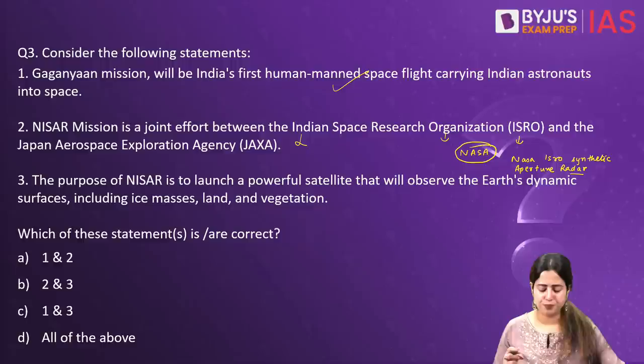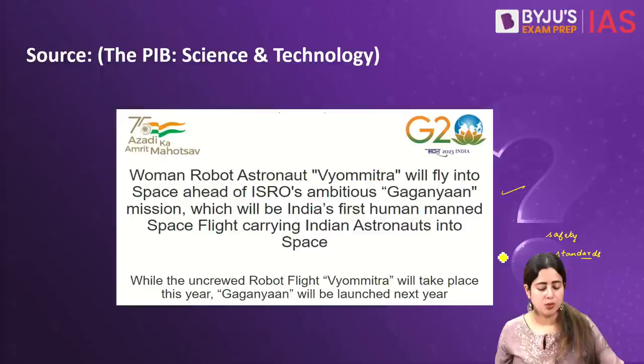The third statement says the purpose of NISAR is to launch a powerful satellite that will observe Earth's dynamic surfaces including ice masses, land and vegetation. This is absolutely valid. So the first and the third statements are valid, making C the correct answer.